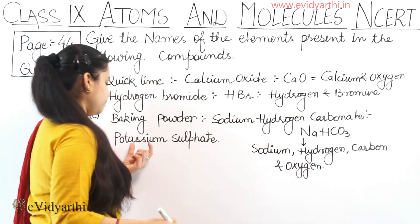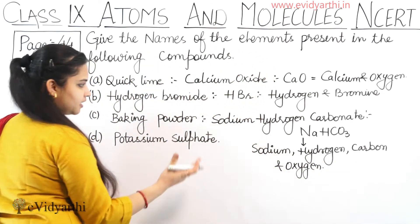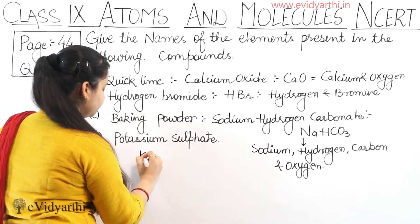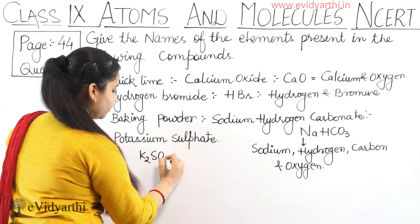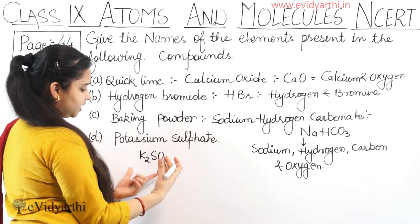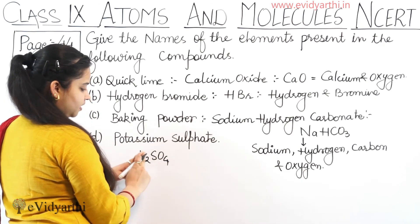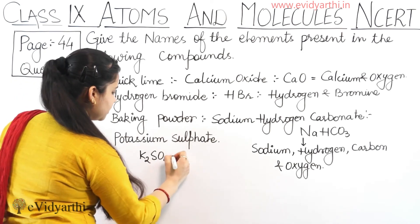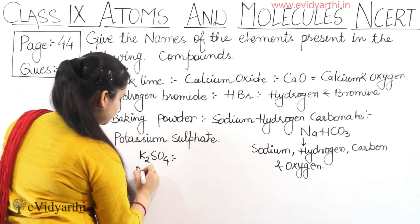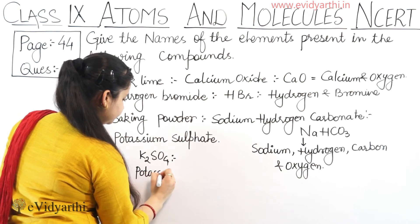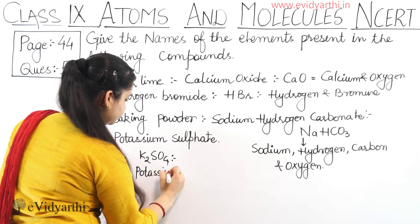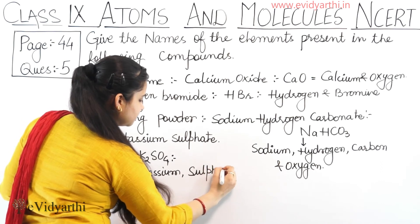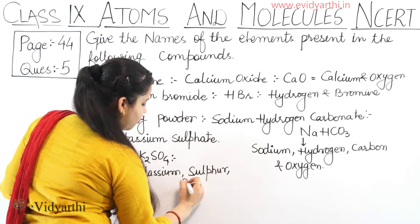The last one — Potassium Sulphate. The chemical formula of Potassium Sulphate is K2SO4. So how many types of elements are present in it? Three types of elements: Potassium, Sulphur, and Oxygen.